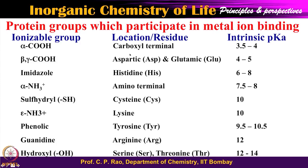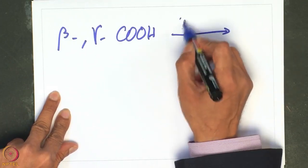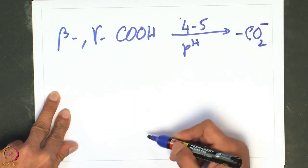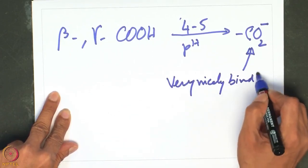This table shows which side chains can bind to metal ions. The alpha-COOH is not counted here; rather, the beta and gamma carboxylates from aspartic and glutamic acid can deprotonate at a pH of 4 to 5. That means when the local pH in the biological system is 4 to 5, the COOH is converted into COO⁻, which can very nicely bind to the metal center.